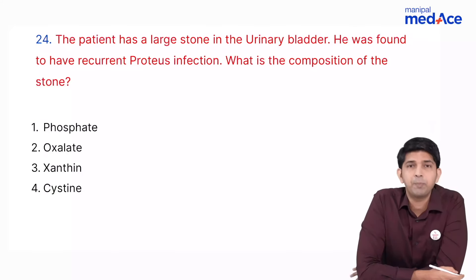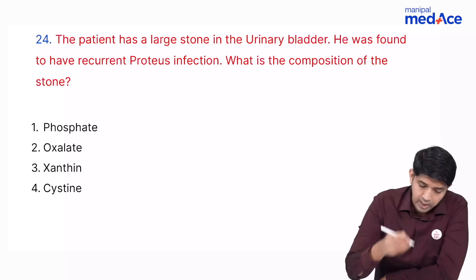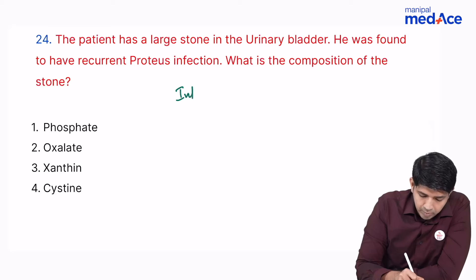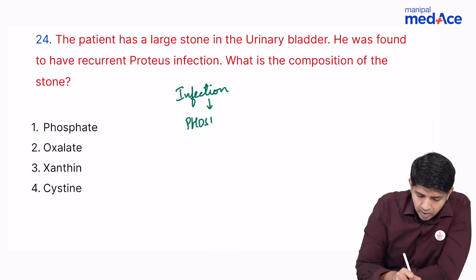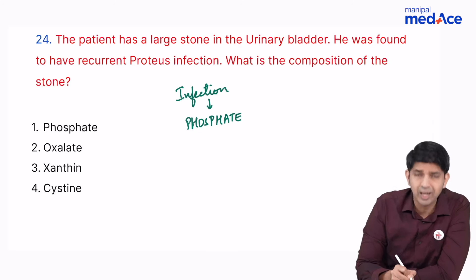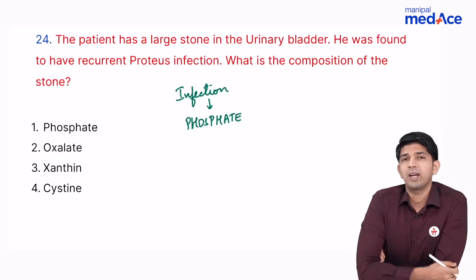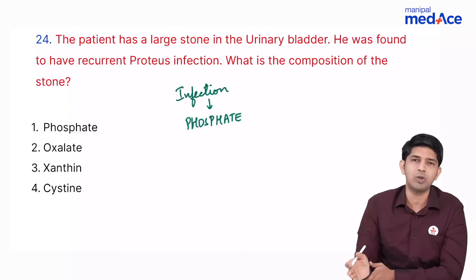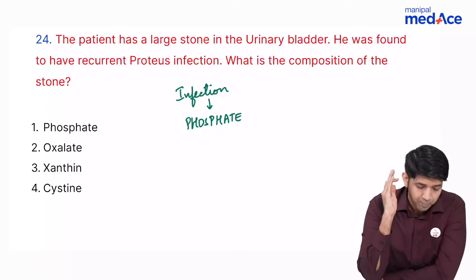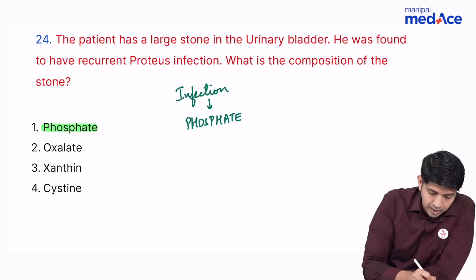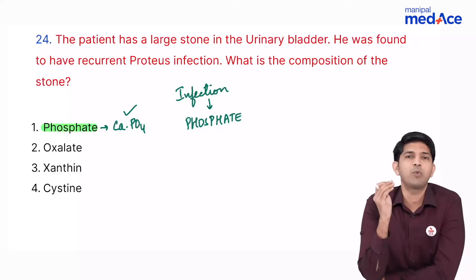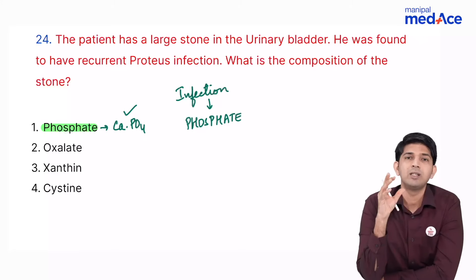A patient with a bladder stone had recurrent Proteus infection. Proteus infection is associated with phosphate (struvite) stones. This was also asked in a recent INICET for kidney stones — the principle is the same since bladder stones are an extension of kidney stones. If phosphate was listed as an option, that is the answer; if calcium phosphate was listed, that becomes the answer.